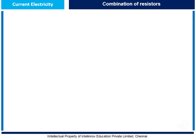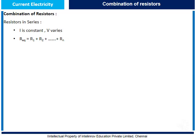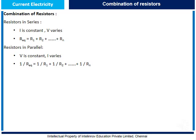Now let us understand combination of resistors. If resistors are connected in series, the current is constant but voltage varies. Thus, equivalent resistance is given by R1 plus R2 plus up to Rn. However, if resistors are connected in parallel, then voltage is constant and current varies. Thus, the reciprocal of equivalent resistance is given by the sum of reciprocals of individual resistances.